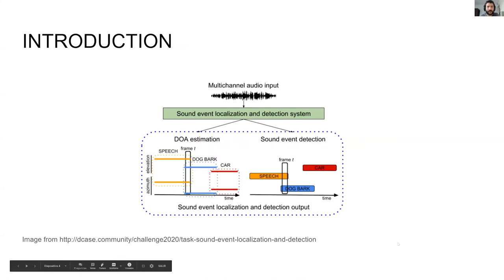Sound event localization and detection refers to the problem of identifying for each individual event present in a sound field the spatial location, temporal activity, and sound class to which it belongs.